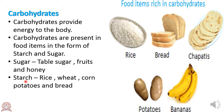Next is starch. Green plants make their own food in the form of sugar, some of which is converted and stored as starch. Rice, wheat, corn, potatoes, and bread are some sources of starch. When we eat starch-containing plant products, our body breaks down the starch into glucose, which can be easily utilized by the body.